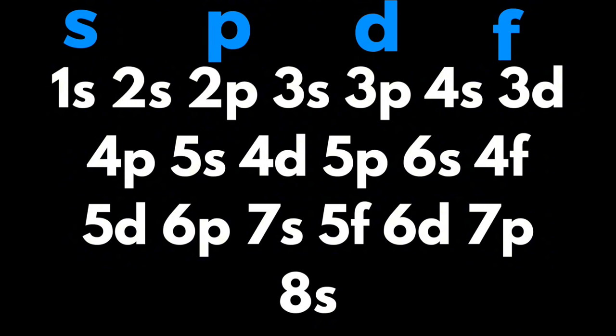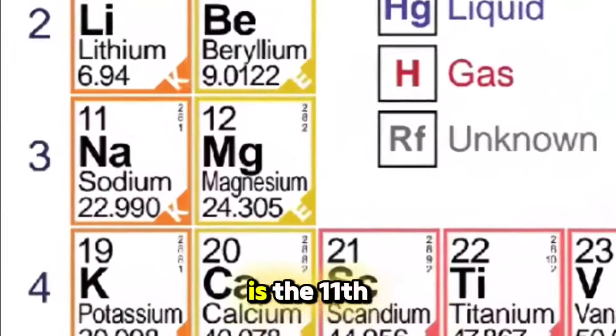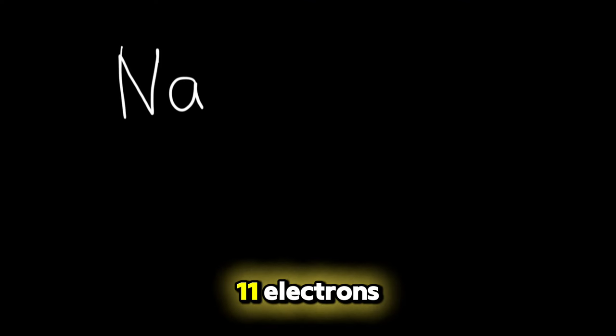Now to distribute according to the Aufbau principle, we have to use this sequence, but basically we will only use the upper part of this sequence. Let's take for example Na. Now Na, which is sodium from the table, is the 11th element. This means that it has 11 electrons.